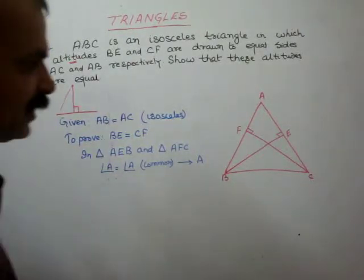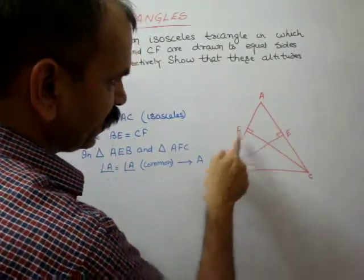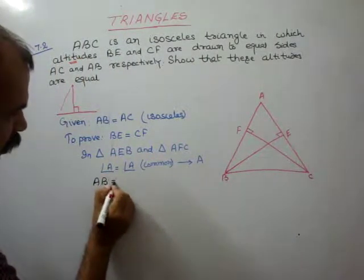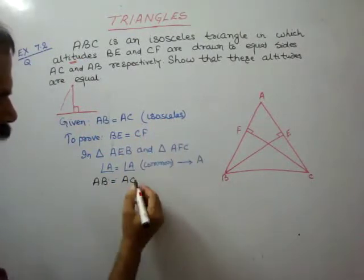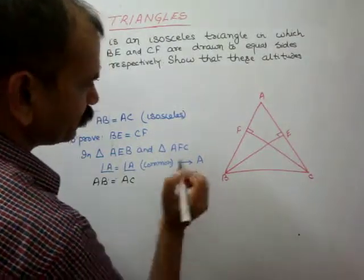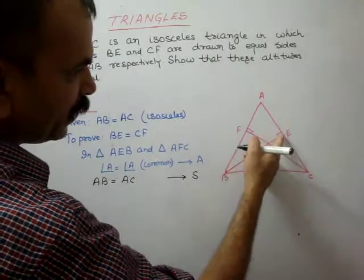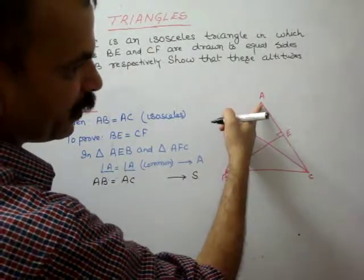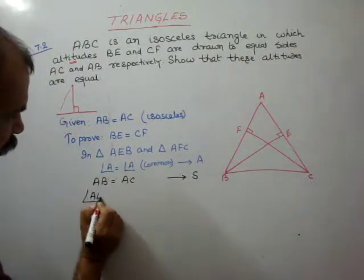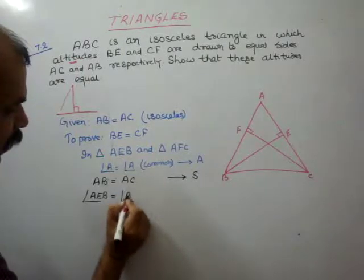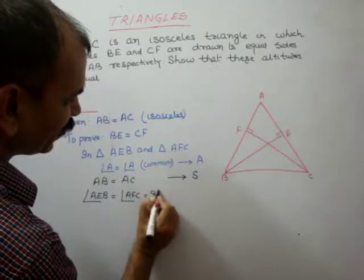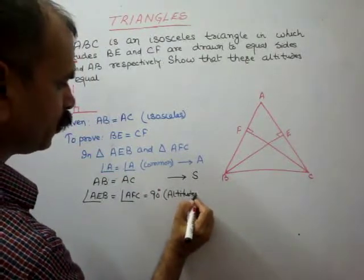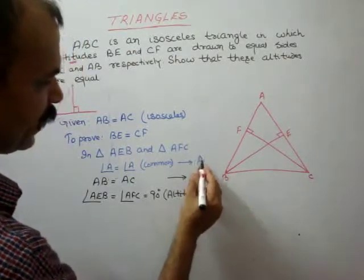After that, looking at the sides: since this is an isosceles triangle, AB is equal to AC — this is already given. And since BE and CF are both altitudes, they make 90 degrees. So angle AEB is equal to angle AFC, which is equal to 90 degrees — because they are altitudes. Therefore, by ASA congruence rule...